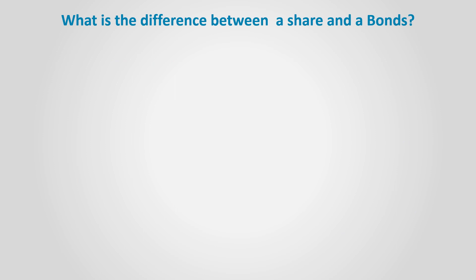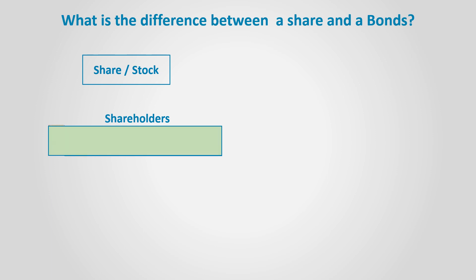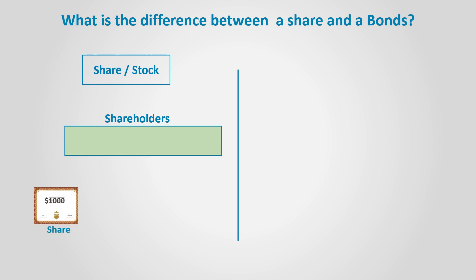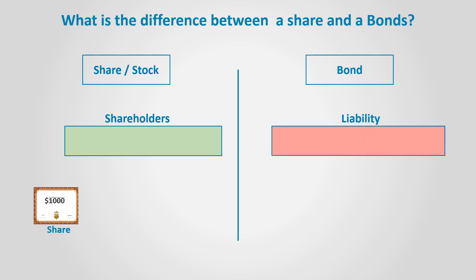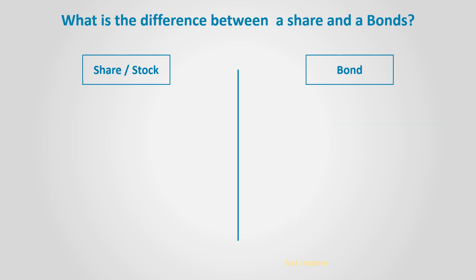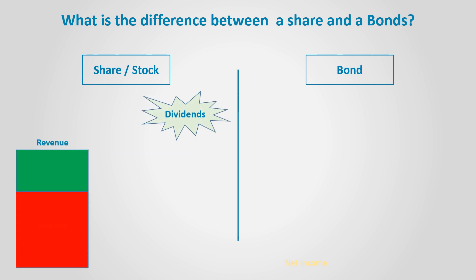Difference between a bond and a share in a company. A share is part of a shareholder's equity, hence a shareholder is an owner. A bond is part of a liability, so the bond holder is regarded as a lender.